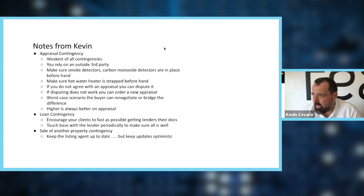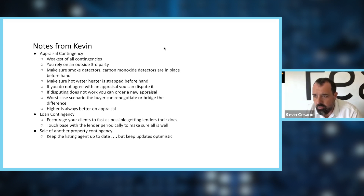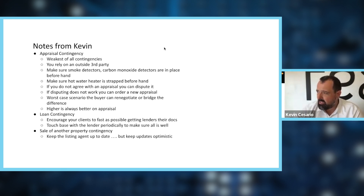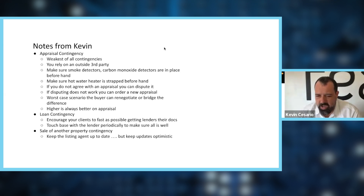If you don't agree with an appraisal, you have options. Most of the time the appraisal comes in at purchase price — clean and easy. But if it comes in low, you can dispute it. If disputing doesn't work, you can order a second appraisal — you don't have to go with the first. Third scenario: if it comes in low, you disputed it, got a second appraisal and it's still low, you can either renegotiate — ask the sellers to come down to the appraised value — or the buyers can bridge the gap and pay the additional difference out of pocket.